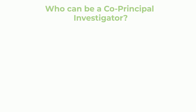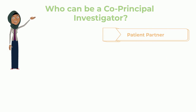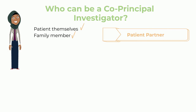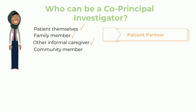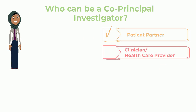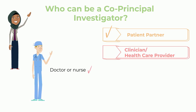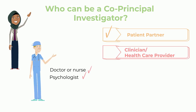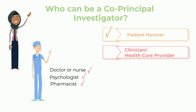Who can be a co-principal investigator? A patient partner — this could be the patient themselves, a family member, other informal caregiver, or a community member. A clinician or healthcare provider — this could be a doctor or a nurse, a psychologist, a pharmacist, or anyone working in healthcare.